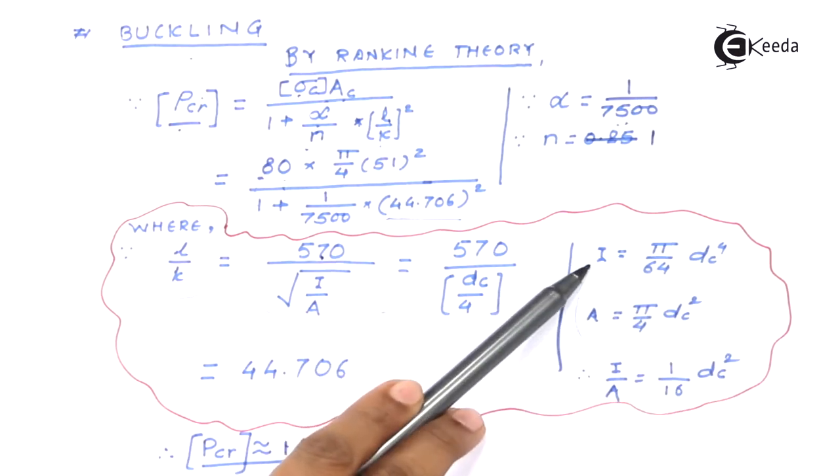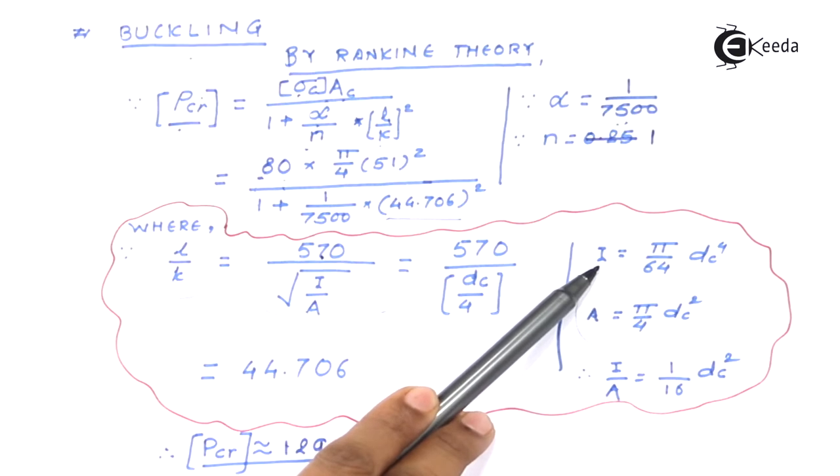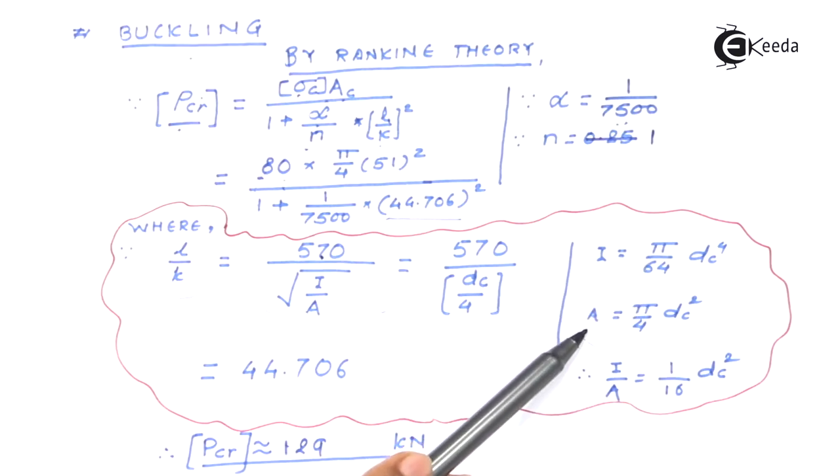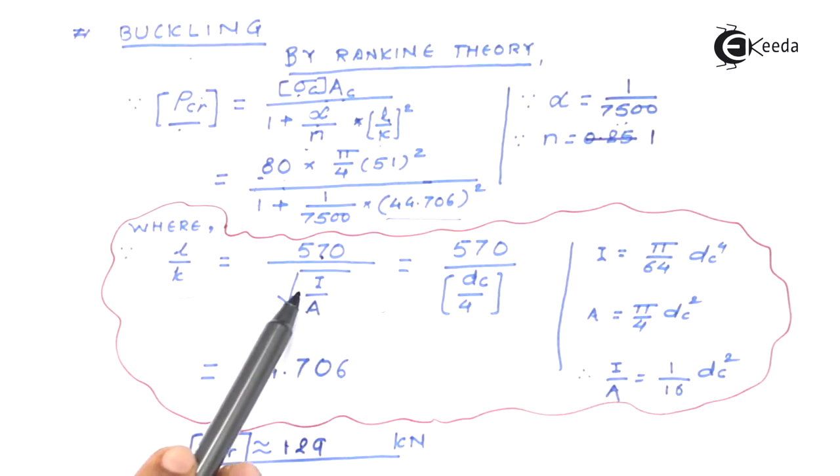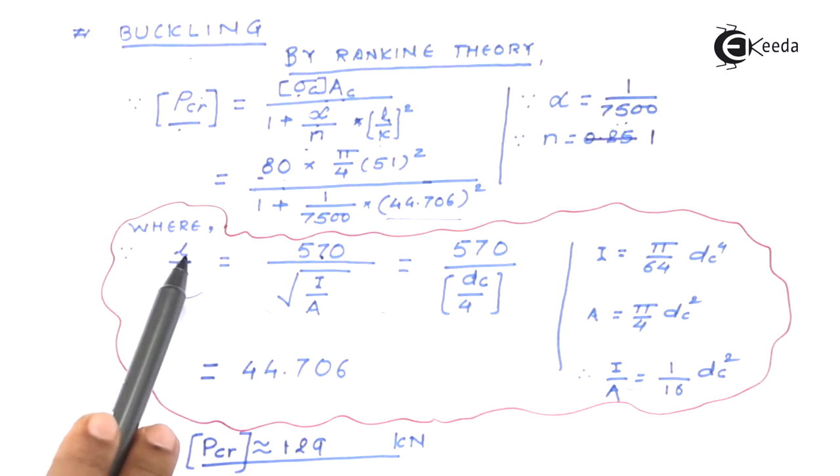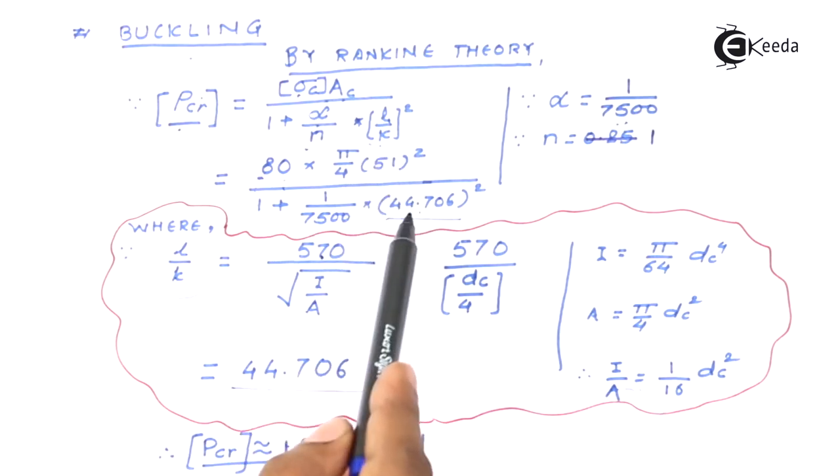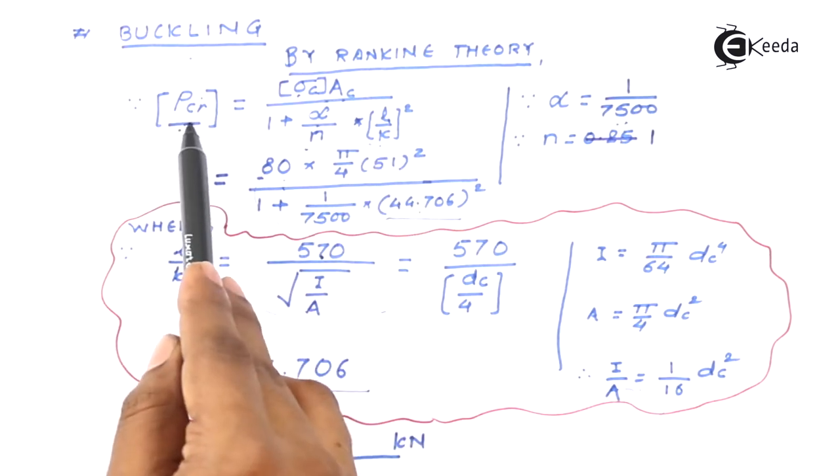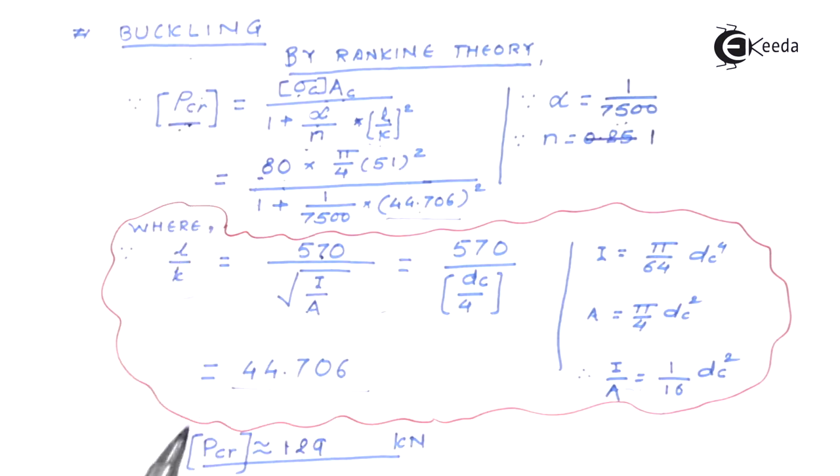We may increase or decrease the length, it will not hamper the answer that much but this is the important relation. Now we know that it's a solid circular shaft, the cross section of core diameter looks like a solid circular shaft and for that the ratio can be found out using this. Its moment of inertia will be given by this formula, its area of cross section by this formula. If we take the ratio we will get this particular answer and if we take the square root of that thing it becomes dc divided by 4. You can work out this, you will get this answer. So l divided by k value I obtained is 44.706.